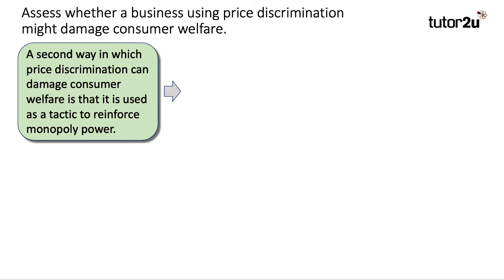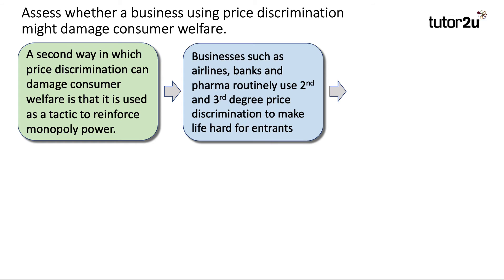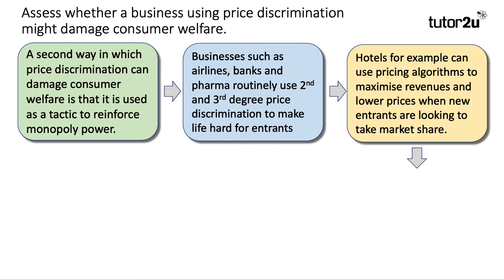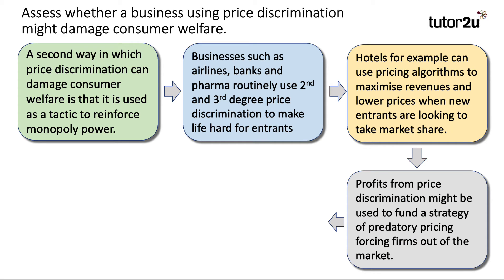The second way price discrimination can damage welfare is that it's used as a tactic to enforce monopoly power. Businesses — often airlines, banks, pharmaceutical companies — routinely use second and third degree discrimination to make life hard for a new entrant. Hotels, for example, could use price discrimination to lower their prices when new entrants are looking to take market share. And indeed, the profits from price discrimination might be used to fund predatory pricing, which is illegal but very hard to prove, designed to force firms out of the market by pricing at a loss to one group of customers.